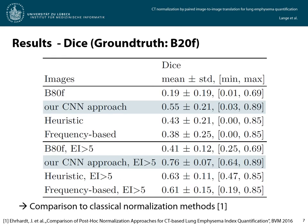We evaluated our results of the emphysema segmentations with the Dice coefficient and compared those to the results of normalization with classical methods on the same data. The classical methods included a heuristic and a frequency-based normalization approach. Naturally, the mean Dice of small segmentations can be expected to be lower than the mean Dice of bigger segmentations with a higher emphysema index. Because of this, we show the overall statistics as well as statistics only for patients with an emphysema index higher than 5%. The Dice value for our CNN-based normalization approach in both statistical calculations shows a significant improvement compared to the B80F without normalization as well as both classical methods, and reaches a mean of 0.76 with a standard deviation of 0.07 for emphysema indices higher than 5%.